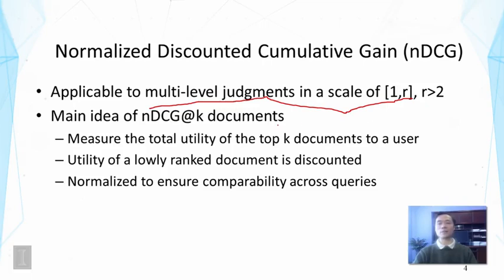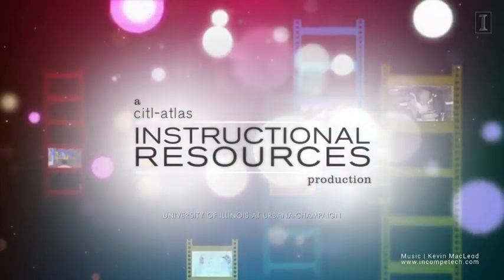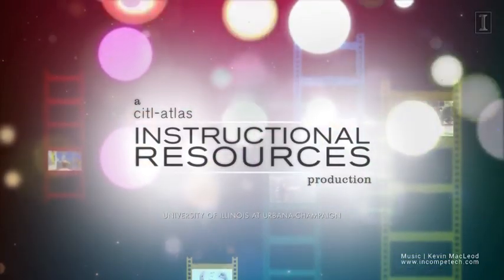The main idea of this measure is to measure the total utility of the top K documents. So you always choose a cutoff, and then you measure the total utility. It will discount the contribution from a lower ranked document. And then finally, it will do normalization to ensure comparability across queries.